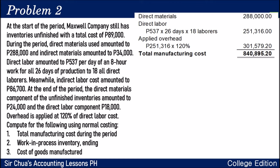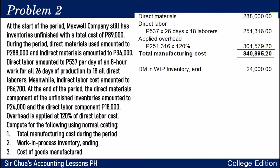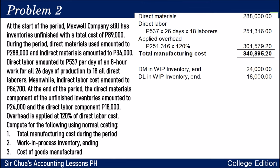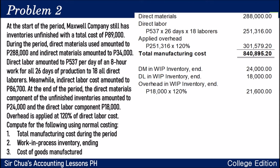Question number two: the ending balance of work in process inventory. The direct materials component of the unfinished inventory is $24,000, the direct labor component is $18,000. Since we're in normal costing, we apply overhead at 120% of direct labor: $18,000 times 120% equals $21,600. Adding materials, labor, and overhead, the work in process inventory at the end of the period is $63,600.